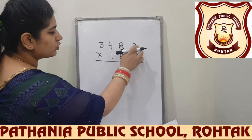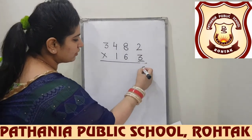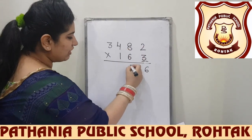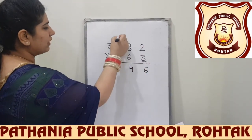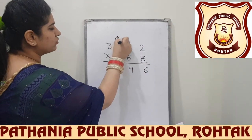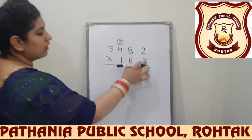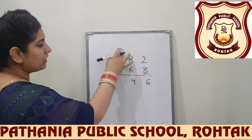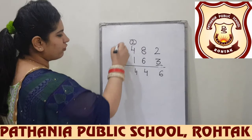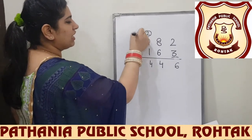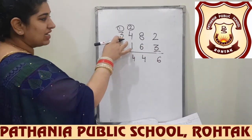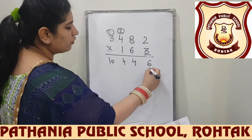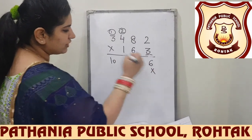3 × 2 = 6. 3 × 8 = 24, so write 4 and carry 2. Now 3 × 4 = 12, plus 2 carry = 14, so write 4 and carry 1. Then 3 × 3 = 9, plus 1 carry = 10. Now put a cross here before multiplying with the next digit.